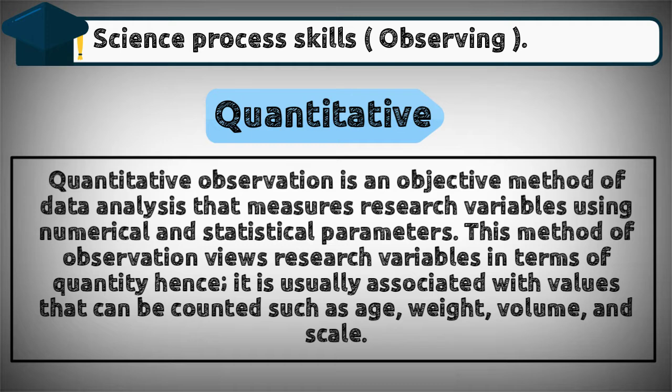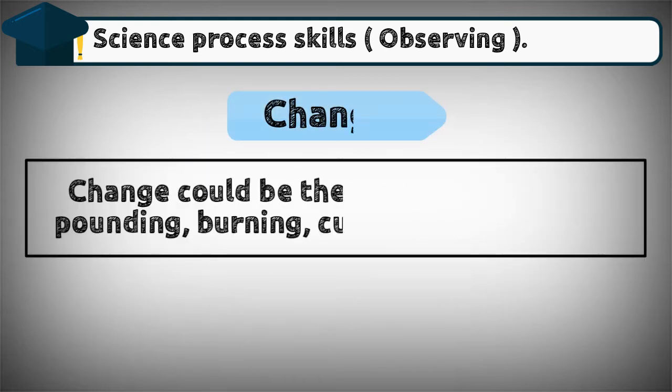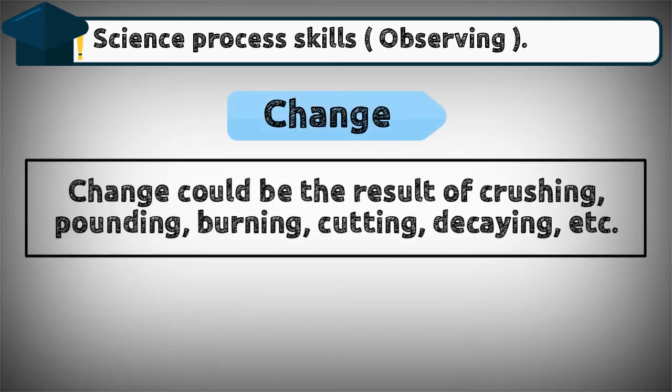Quantitative observation is an objective method of data analysis that measures research variables using numerical and statistical parameters. This method views research variables in terms of quantity, and is usually associated with values that can be counted, such as age, weight, volume, and scale. Change could be the result of crushing, pounding, burning, cutting, decaying, etc.